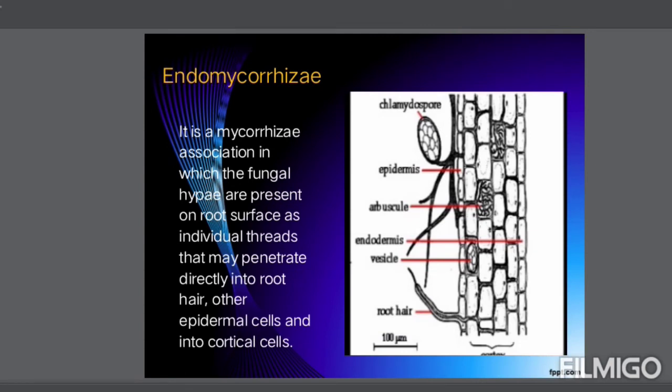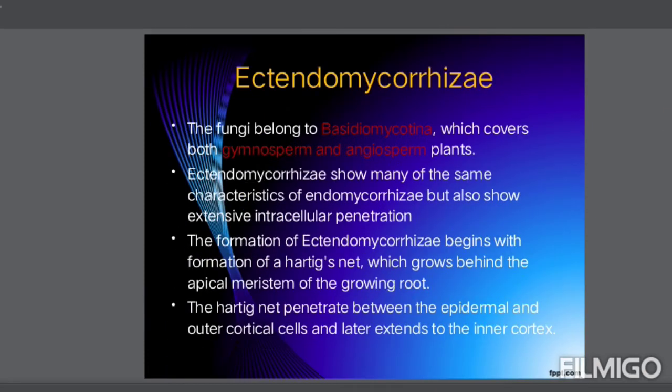What is meant by endomycorrhiza? When the fungi are present on the surface of the root, they produce their hyphae not between the cells but into the cell — they penetrate into the cell. This is called endomycorrhiza. Ectendomycorrhiza is similar to endomycorrhiza, but it also penetrates between the cells. The fungi belong to the Zygomycotina family and are found in both gymnosperm and angiosperm plants.